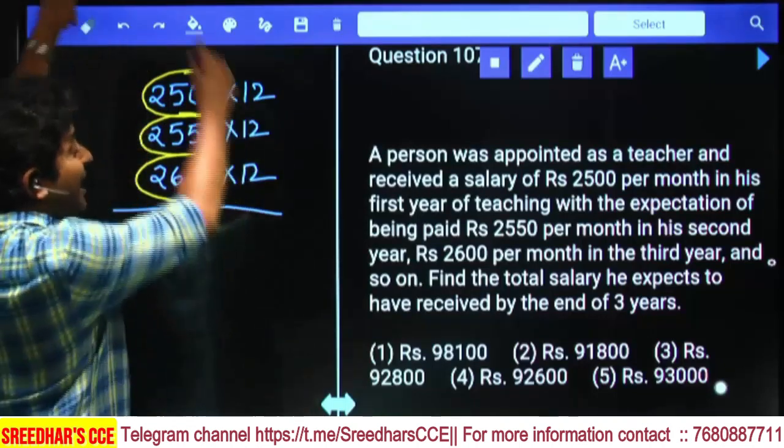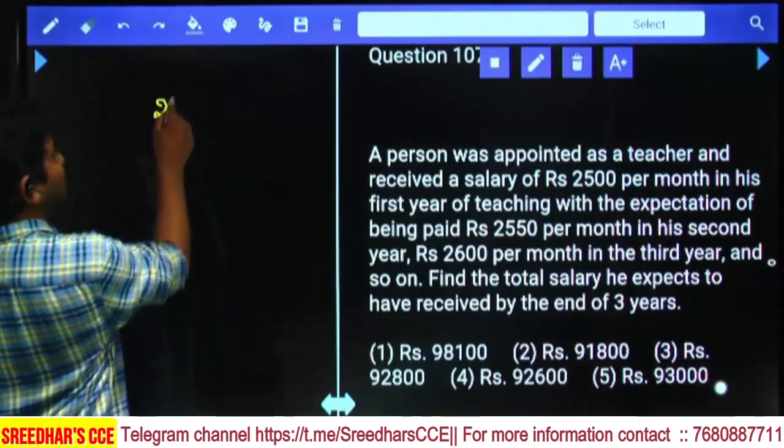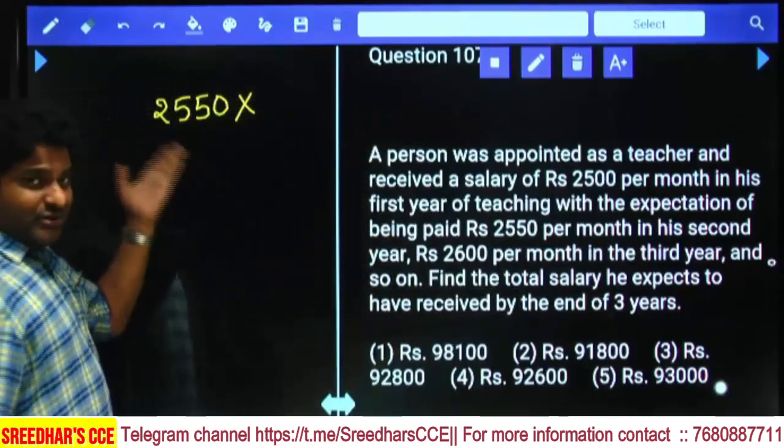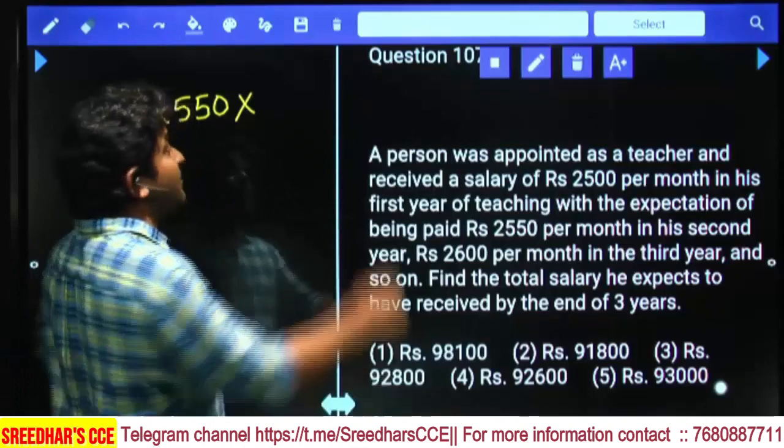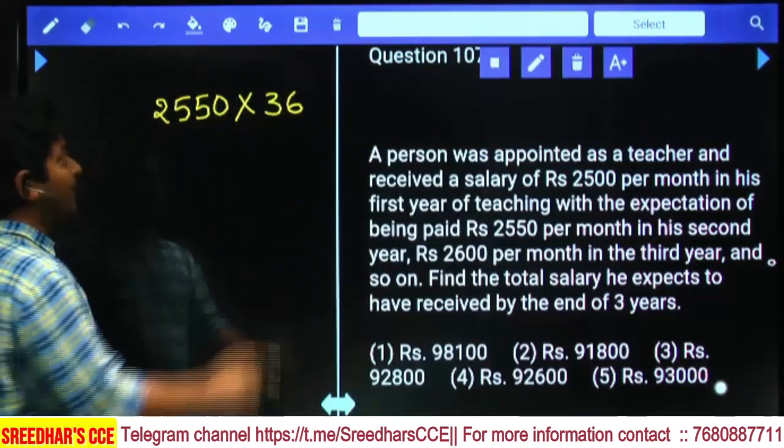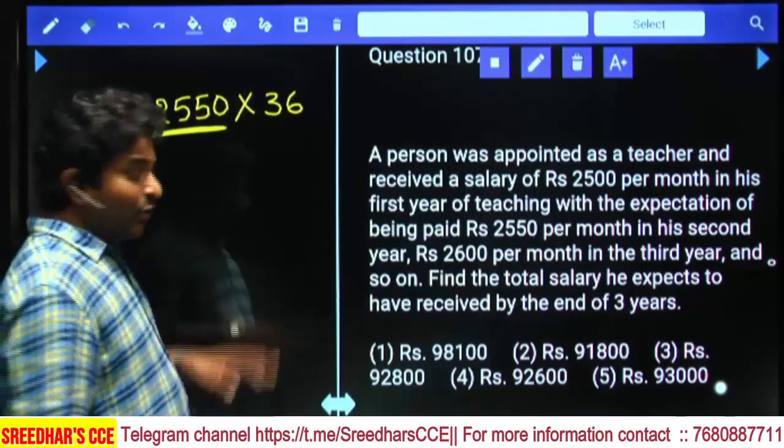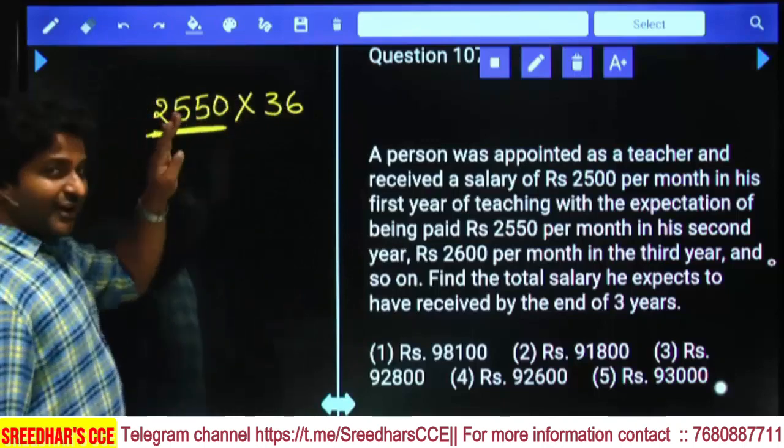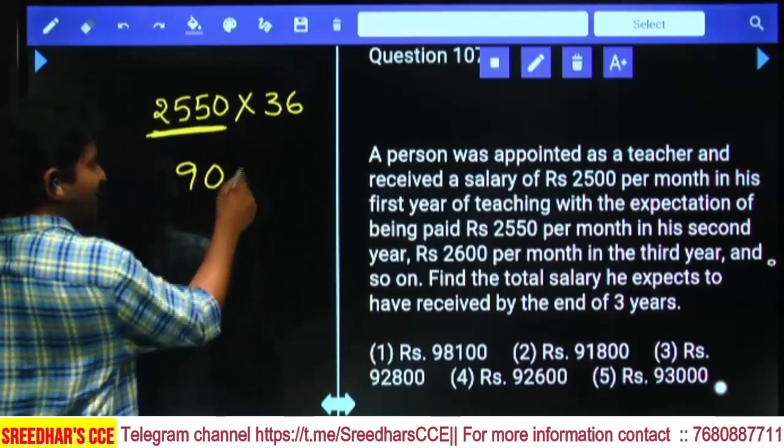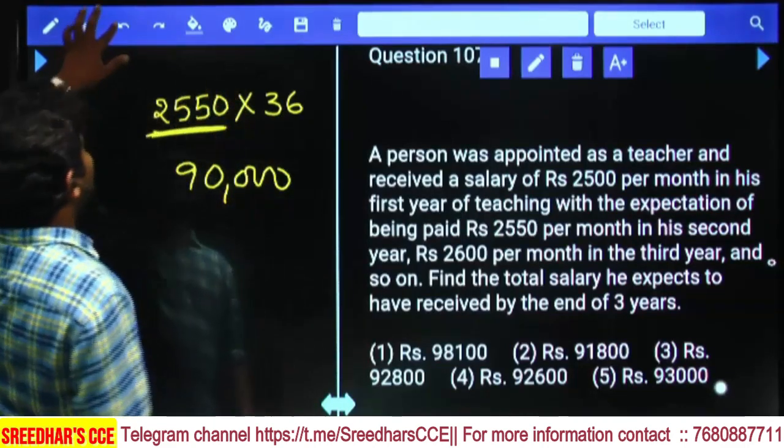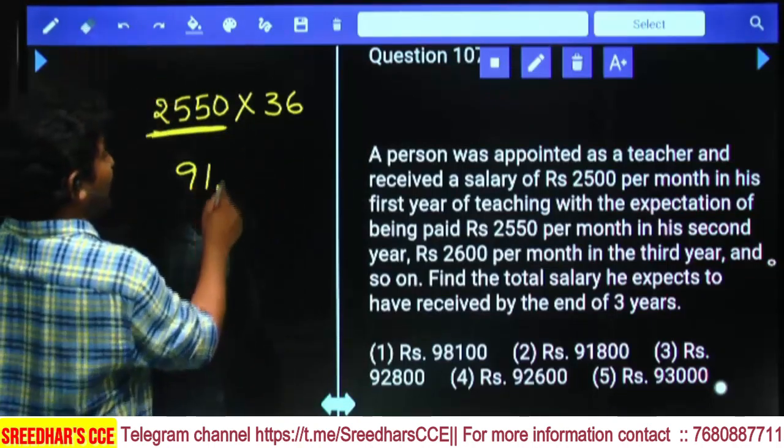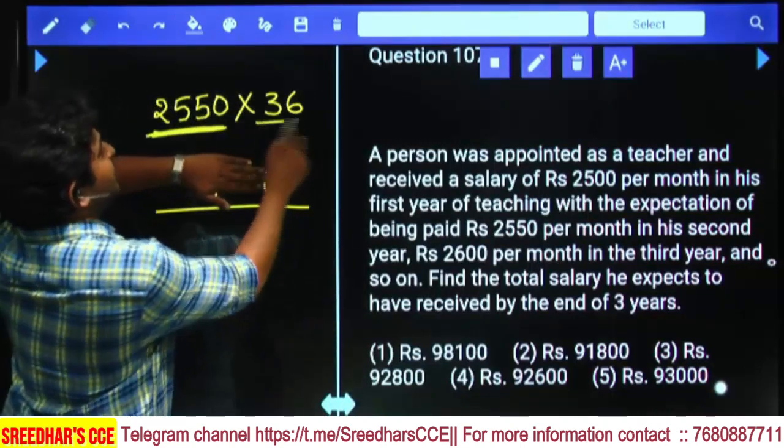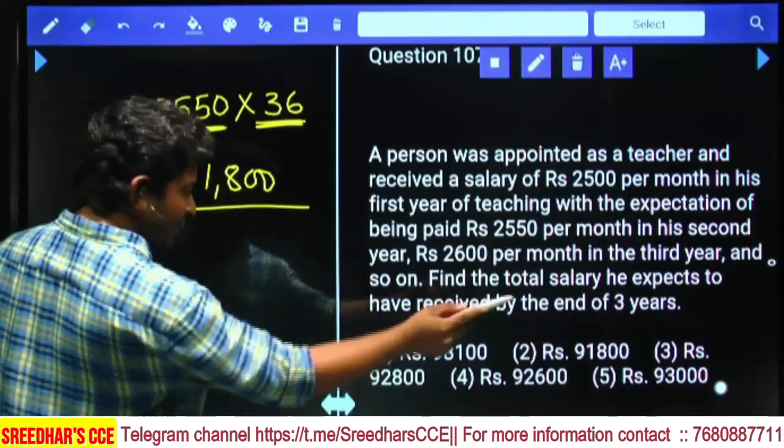These are consecutive numbers with a difference of 50. For consecutive numbers, the middle number is the average. So average salary is 2550, and you need to calculate total salary for 36 months. Treat 2550 as 2500 plus 50. 2500 times 36 is 90,000, and 50 times 36 is 1800. Total is 91,800. Second option is the final answer. Before simplification, verify it's a 9 multiple. First option is 9 multiple, second is also 9 multiple.